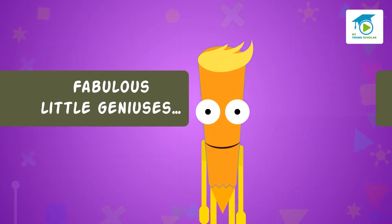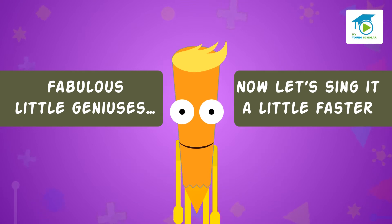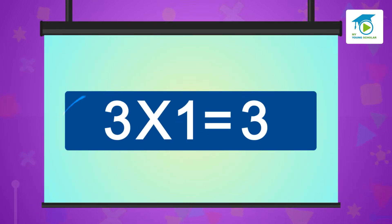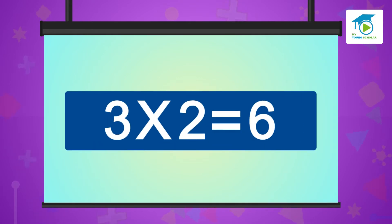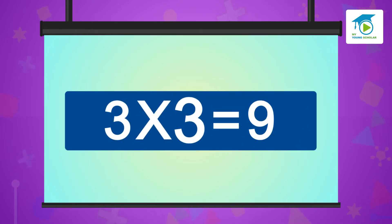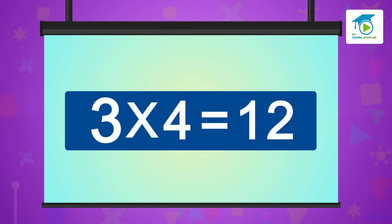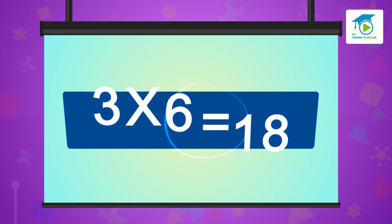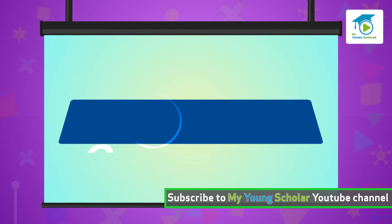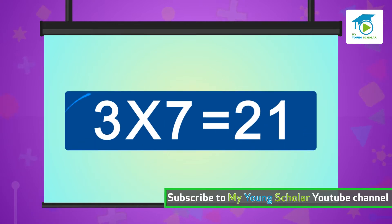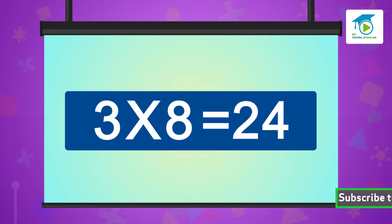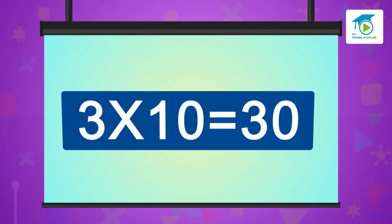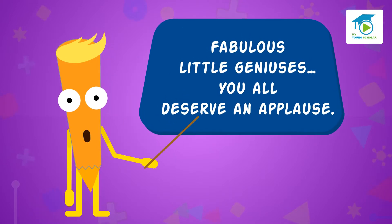Fabulous little geniuses. Now let's sing a little faster. Three ones are three, three eights are twenty-four, three nines are twenty-seven, three tens are thirty. Fabulous little geniuses.